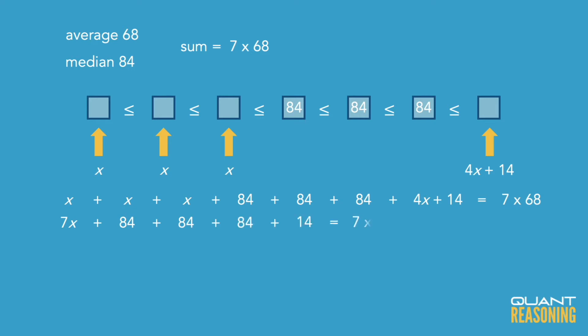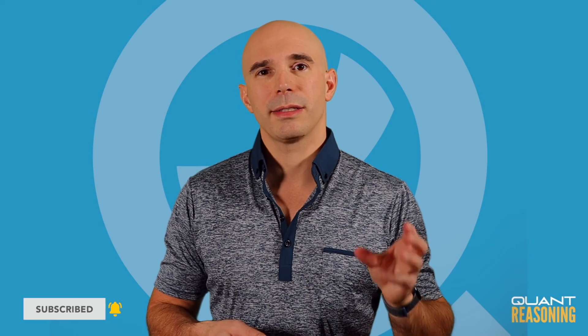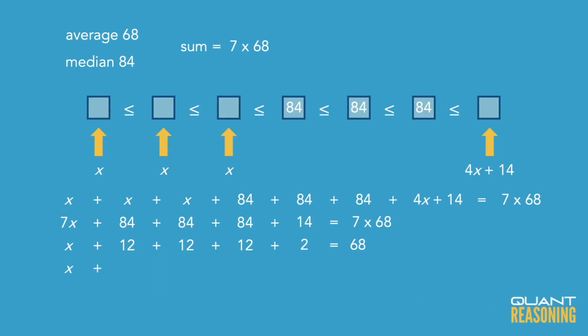Three times 84 — well, 84 is a multiple of 7, it's 12 times 7, so pulling out that factor of 7 leaves 3 times 12. The plus 14 also has a factor of 7 — that's 2 times 7 — so you can pull a 7 out of there as well. On the right-hand side we have 7 times 68. Reducing the entire equation by a factor of 7, we get x plus 36 plus 2 equals 68, which means x equals 30.